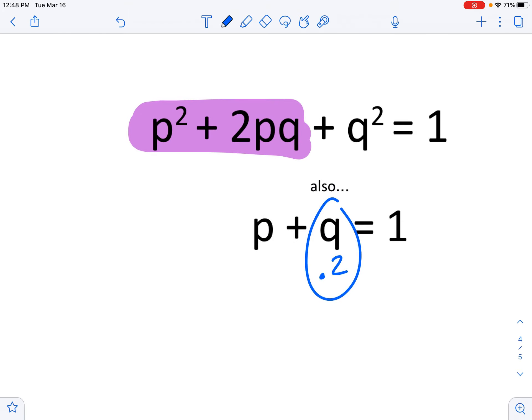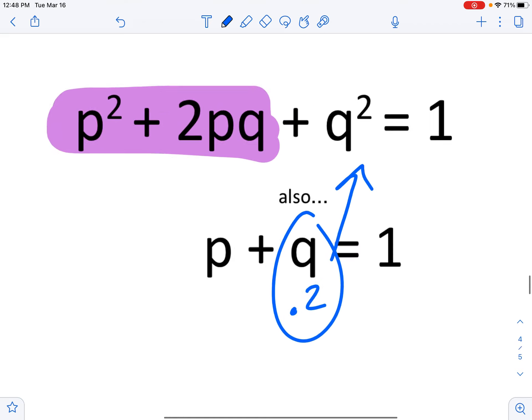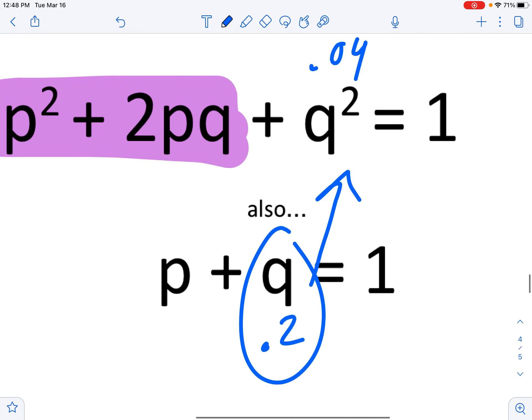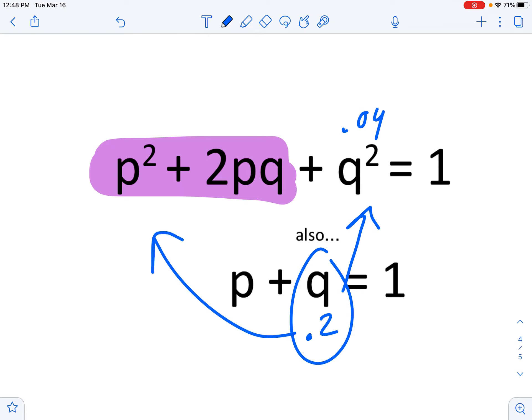So let's go ahead and move around here. So I will go ahead and get q squared here. So q squared, what's 0.2 times 0.2, equals 0.04.